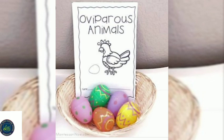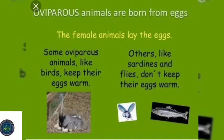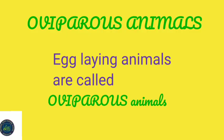First one is oviparous animals. The female oviparous animals lays eggs. Do you know what oviparous animals are? Egg-laying animals are called oviparous animals.